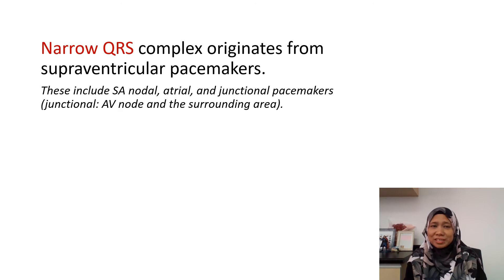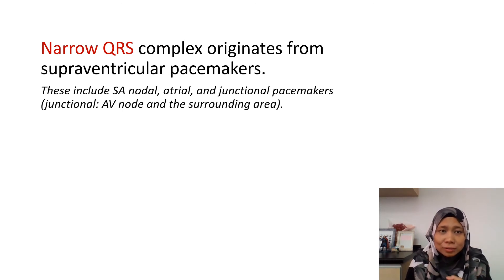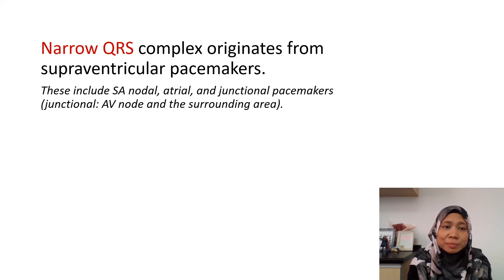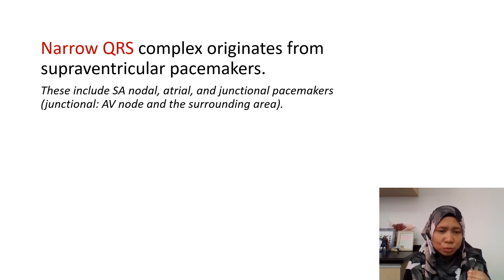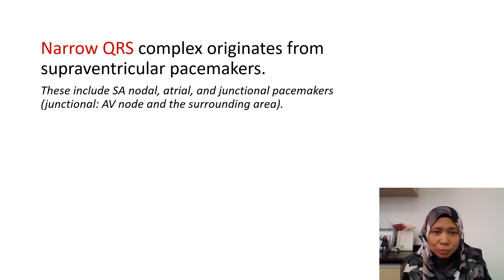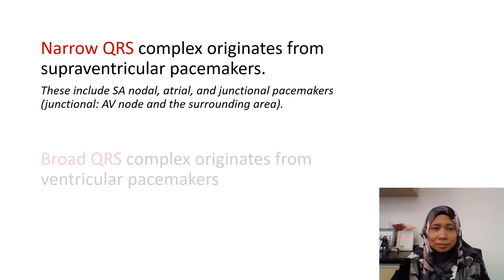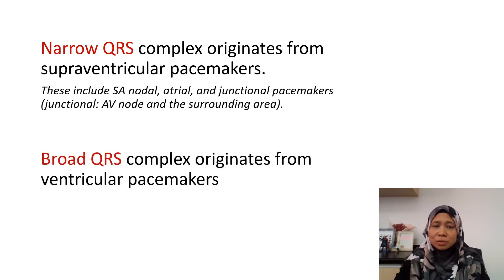Narrow QRS complex originates from the supraventricular pacemakers, which includes the SA node, the atrial tissue, and the junctional pacemakers — including the AV node and the surrounding area. These pacemakers produce narrow QRS complexes because the impulse goes through the AV node and is passed down the specialized conduction pathway. Broad QRS complex, on the other hand, originates from the ventricular pacemakers, because the impulse travels through the myocardium.